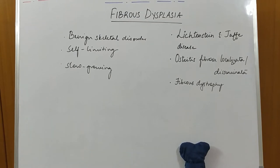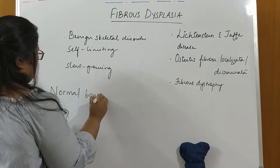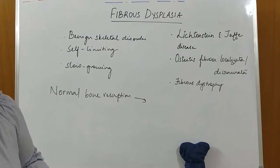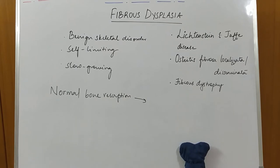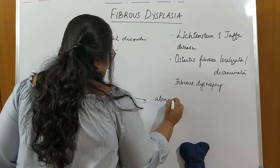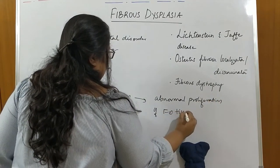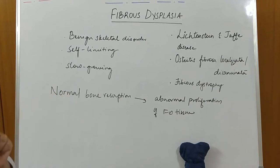What happens in Fibrous Dysplasia is that normal bone resorption occurs — just like a normal process, bone gets resorbed. But what replaces this bone is not healthy or mature bone. What replaces it is woven bone — immature bone. So it's normal bone resorption followed by abnormal proliferation of fibro-osseous tissue. All clinical features of Fibrous Dysplasia revolve around this abnormal proliferation of fibro-osseous tissue.